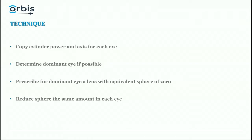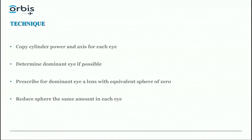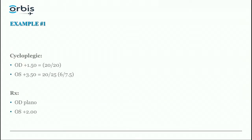If one eye has much more astigmatism than the other, the better eye is generally the dominant eye. Even if you guess wrong on dominance, you won't give a wrong prescription — just a slightly different one. To avoid changing accommodation, prescribe for the dominant eye a lens with a spherical equivalent of zero. Then, to correct anisometropia, reduce the sphere the same amount in each eye from the cycloplegic refraction.